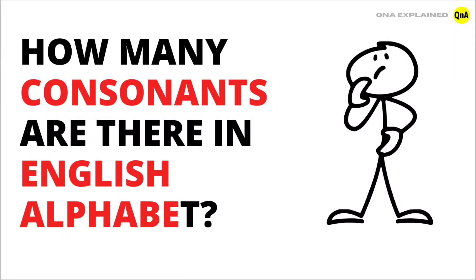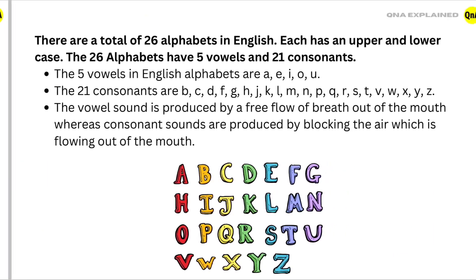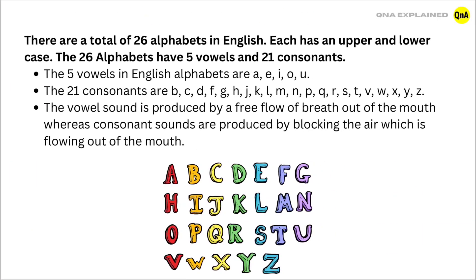How many consonants are there in English alphabet? There are a total of 26 alphabets in English. Each has an upper and lower case.